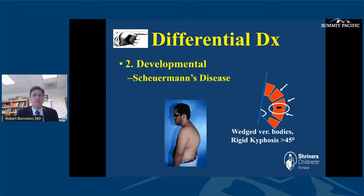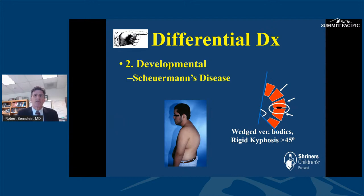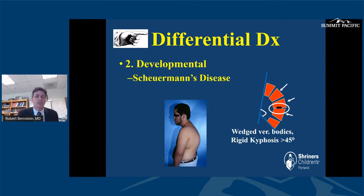There can also be developmental causes of back pain. This is an example of a young man who has Scheuermann's kyphosis or Scheuermann's disease — basically an abnormality of the growth plates in the front of the spine where they don't grow as fast as those in the back, resulting in trapezoidal vertebral bodies, wedging, and a very stiff, rigid kyphosis. A normal kyphosis in a 10 or 12-year-old is around 35 to 40 degrees; anything over about 45 to 50 degrees is considered abnormal, confirming the diagnosis of Scheuermann's kyphosis.